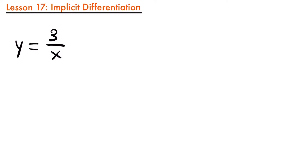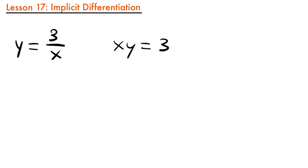So what do I mean by that? If we look at this function right here, we have y equals 3 divided by x, and y is explicitly written as a function of x — y is on one side of our equation and our x term is on the other side. But what if instead we had x times y is equal to 3? In this case, y is no longer written explicitly as a function of x. We call this form an implicitly defined function. Now we could still find the derivative by dividing both sides by x, but we're not always going to be able to rearrange implicitly defined functions so easily. So we're going to want to develop a method to take a derivative of these functions implicitly.